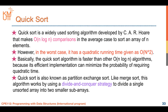QuickSort is faster than other O(n log n) algorithms because of its efficient implementation, which can minimize the probability of requiring quadratic time. QuickSort is sometimes referred to as partition exchange sort, and it works using the divide-and-conquer strategy — the same strategy used by merge sort.